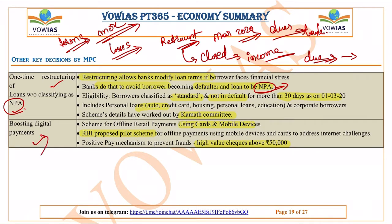The next news is about boosting digital payments. RBI proposed a pilot project for offline retail payments using cards and mobile devices. This is important because many areas — especially rural areas and some urban areas — have poor mobile internet connectivity. RBI is also trying to introduce offline instruments for cashless payments. Additionally, high-value checks above 50,000 rupees will be treated separately; this scheme is primarily for low-value transactions.